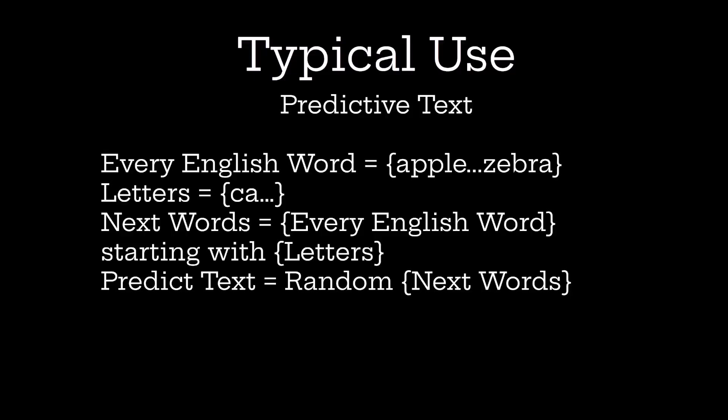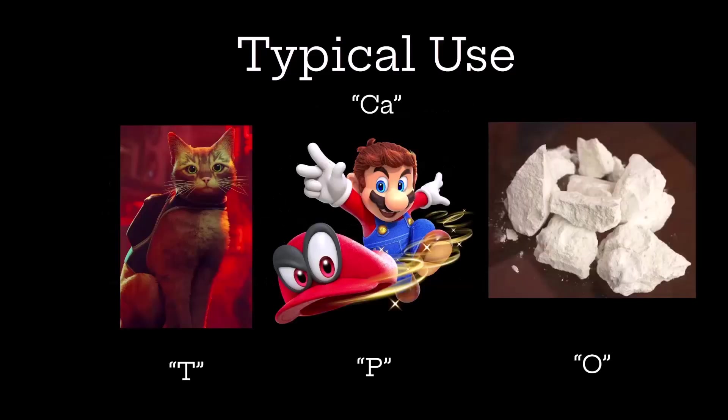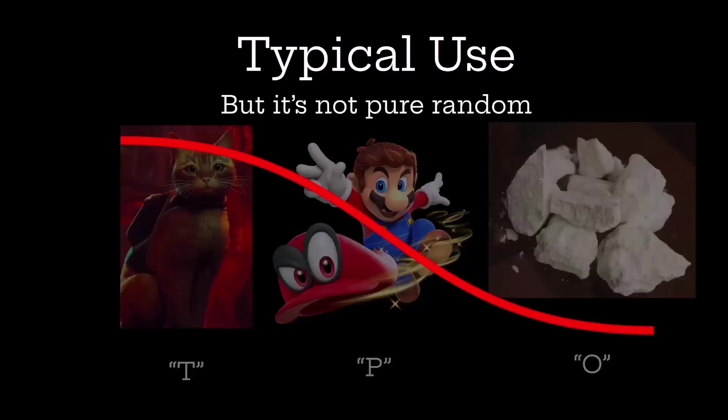A typical use of grammars is in text. This might be a rule for a predictive text stochastic grammar. The algorithm might see T, P, or O as options. However, most of the time when we type 'CA' we don't imagine it's going to be a chemistry equation starting with calcium. So we use a distribution that reflects that — it's not pure random.